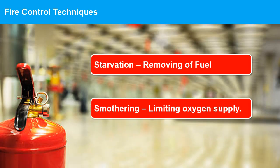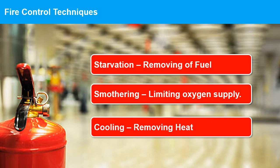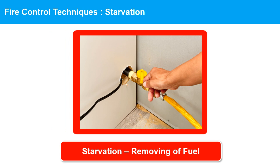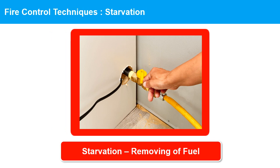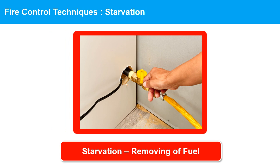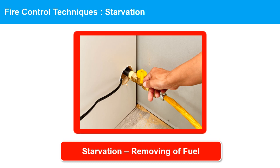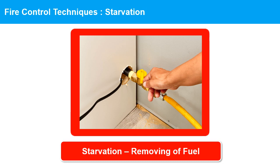Fire control techniques are methods used to control or extinguish fires in order to minimize damage to property and prevent injury or loss of life. There are several techniques used for fire control, including starvation, smothering, and cooling. Starvation — removing fuel. This technique involves removing the fuel source from the fire, which prevents it from continuing to burn.